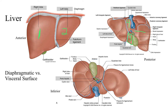The liver has two surfaces we should know about. The first is the diaphragmatic surface, because it sits right on the diaphragm. The other is the visceral surface, which is inferior. The visceral surface — remember visceral means organs — so it's sitting on the organs that are below it, which include the large intestines, small intestines, as well as the stomach.